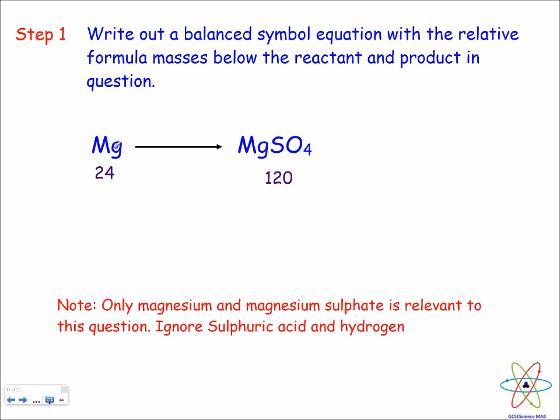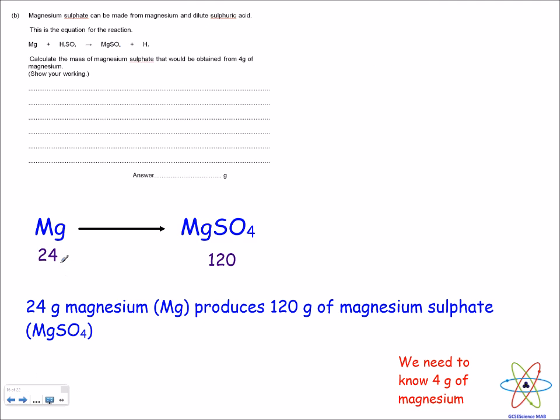The first step is we need to write out our two substances and then write the masses of the substances just below. The mass of one magnesium is 24 and the formula mass of magnesium sulfate is 120. So what does this tell us? It tells us that 24 grams of magnesium produces 120 grams of magnesium sulfate. Depending on the question, this could be kilograms or tons—it doesn't really matter.